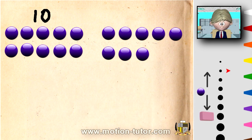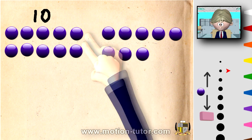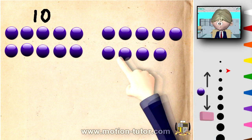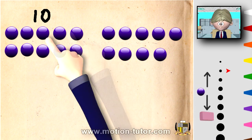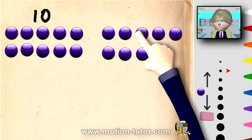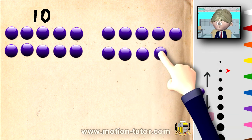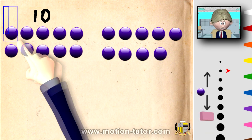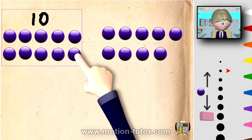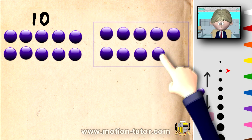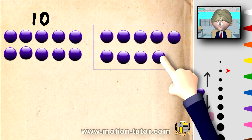And for our last example in this video, it will be 10 and 9 more. 1, 2, 3, 4, 5, 6, 7, 8, 9, 10, 11, 12, 13, 14, 15, 16, 17, 18, 19. So — remember, this is 10 — 10 and 9 more together is 19.